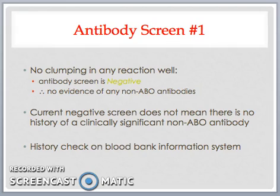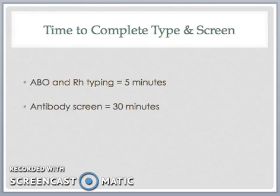Therefore, as part of any type and screen test, the technologist in the blood bank will also perform a history check on the blood bank information system to see whether the patient has ever formed an antibody previously that we need to be aware of currently in order to issue compatible red cells. The ABO and RH typing take the automated analyzer about 5 minutes to complete, and the antibody screen takes about 30 minutes, so the total time needed to result in the type and screen is 30 minutes.